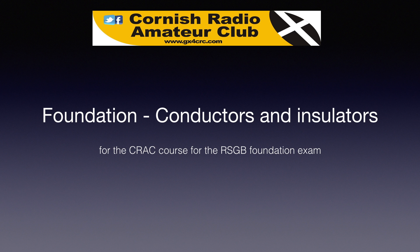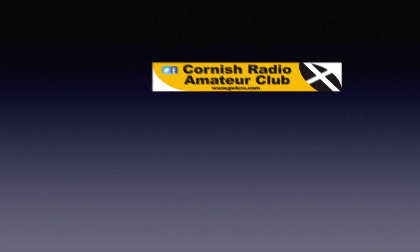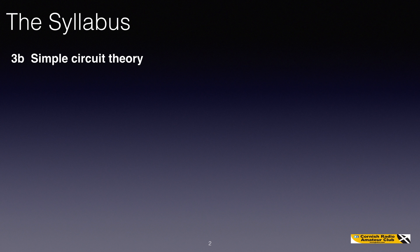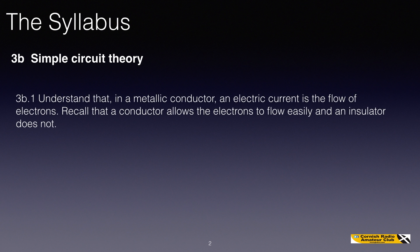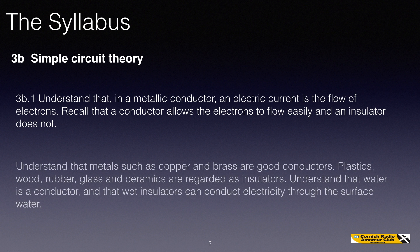This will be quite a short video because there's not a lot about it in the syllabus. It comes under section 3b. Understand that in a metallic conductor an electric current is the flow of electrons. Recall that a conductor allows electrons to flow easily and an insulator does not. Understand that metals such as copper and brass are good conductors. Plastics, wood, rubber, glass and ceramics are regarded as insulators. Understand that water is a conductor and that wet insulators can conduct electricity through the surface water.